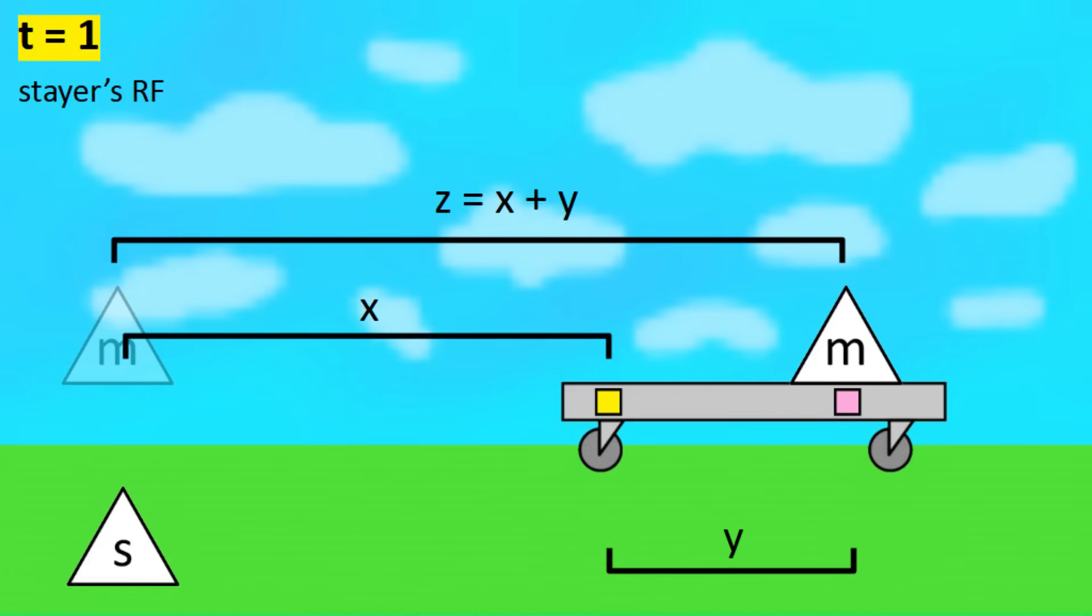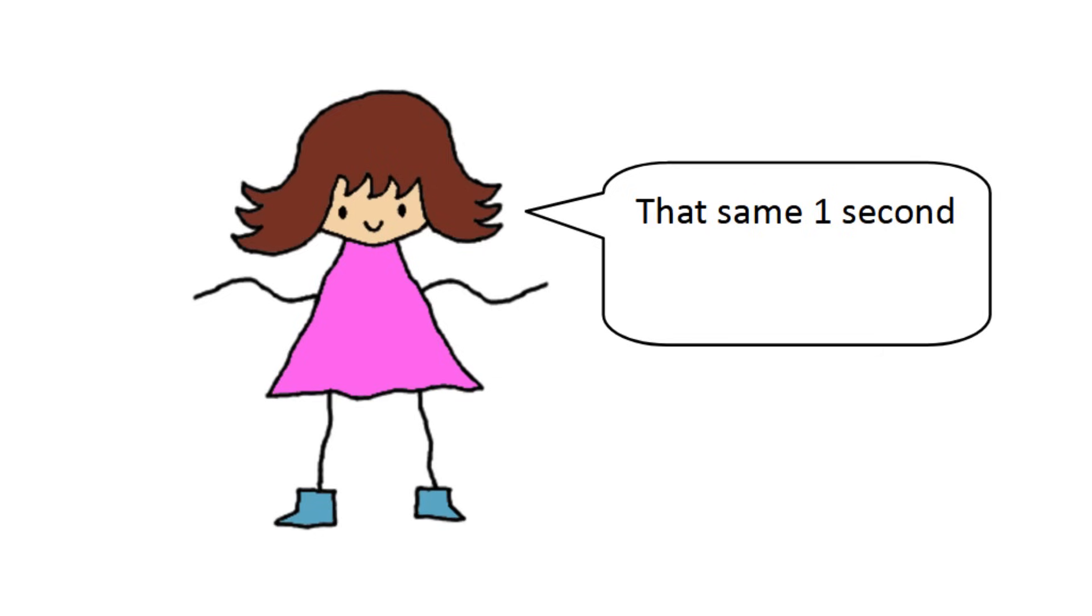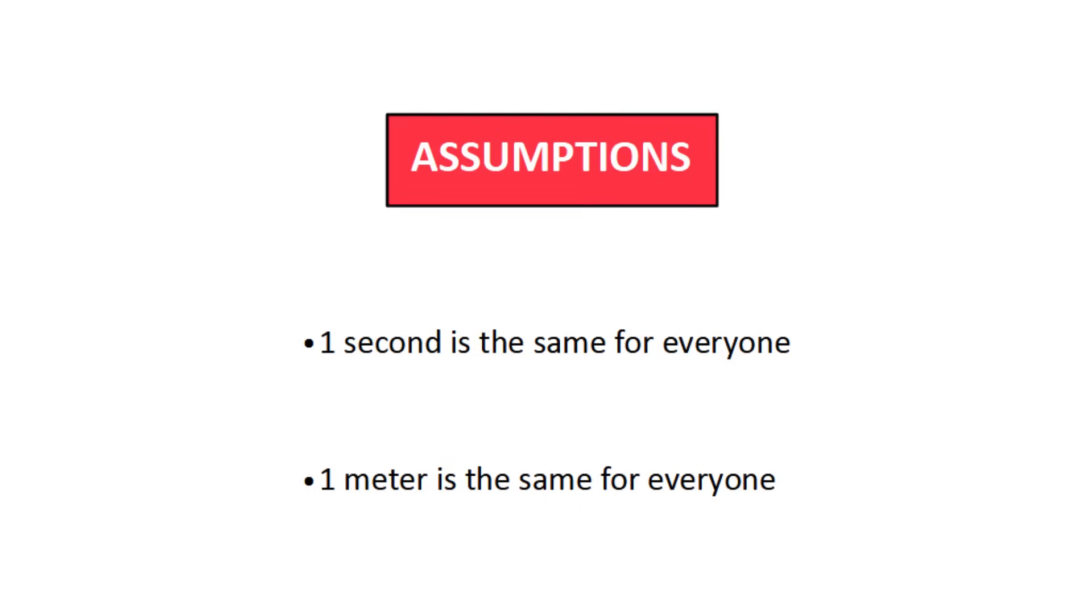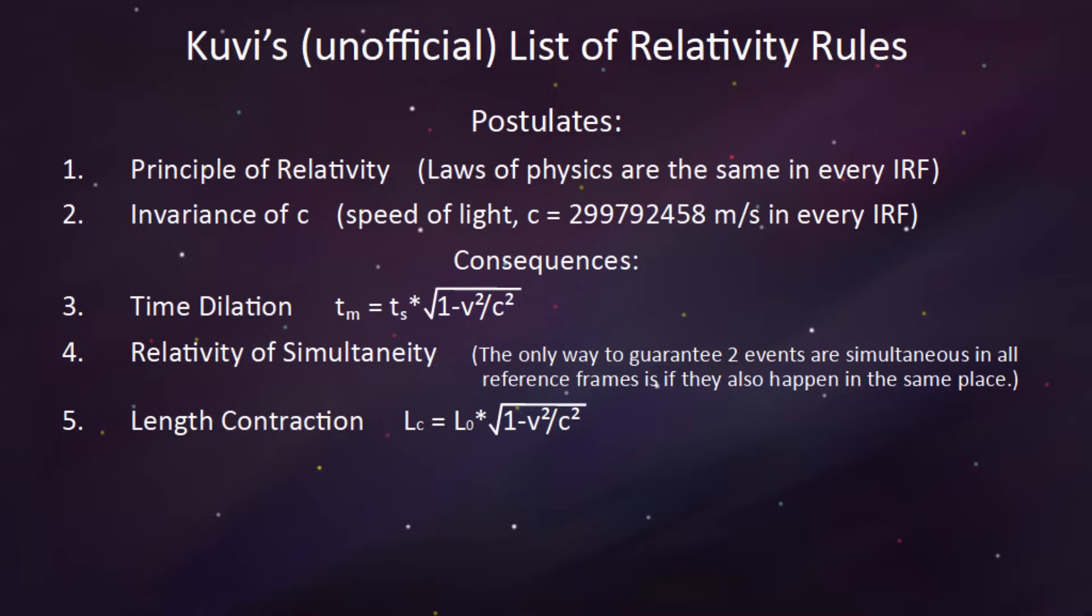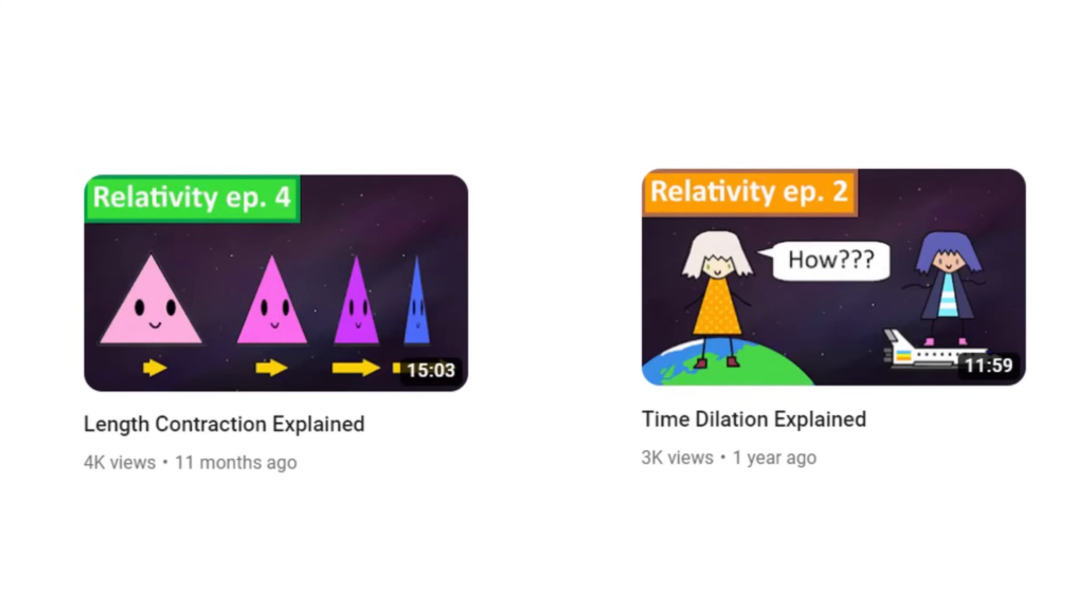This is perfectly reasonable, but only in classical physics. You may have noticed I specifically worded it as that same second, and those same y meters. This is to emphasize the assumptions in the example. Because in relativity, one second is not the same one second for all observers, and likewise, one meter is not the same one meter for all observers. These facts are due to time dilation and length contraction respectively, which each have their own episodes if you want to learn the specifics.